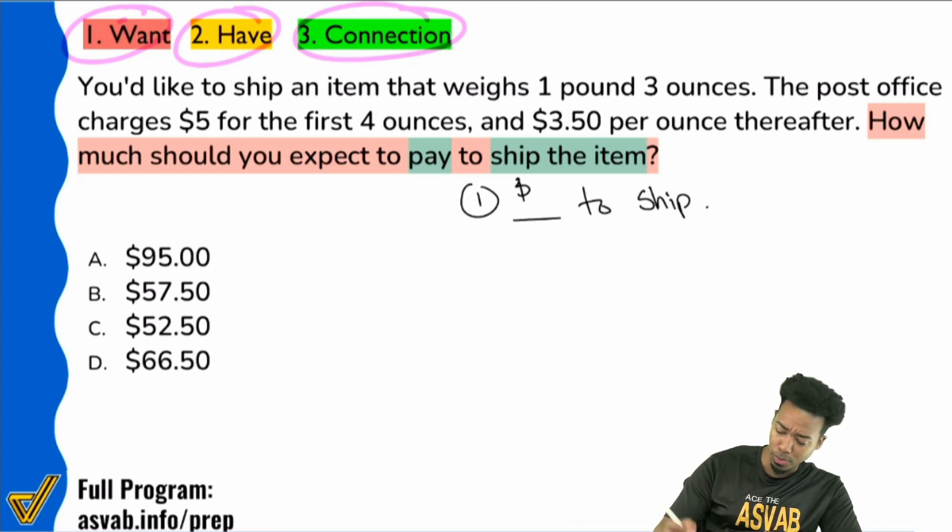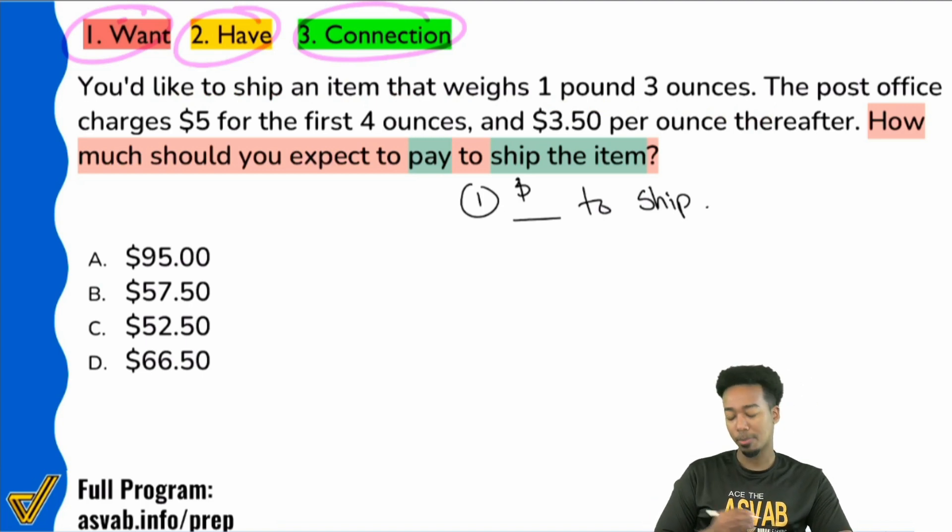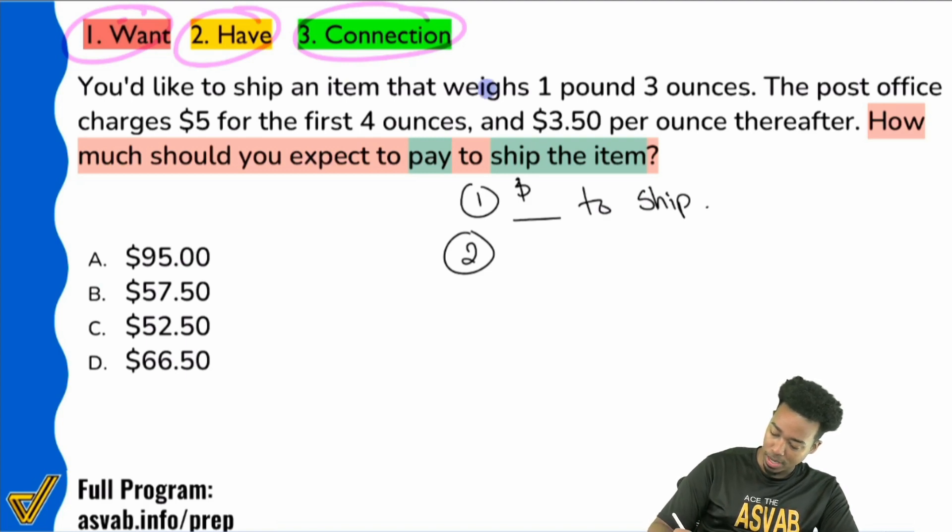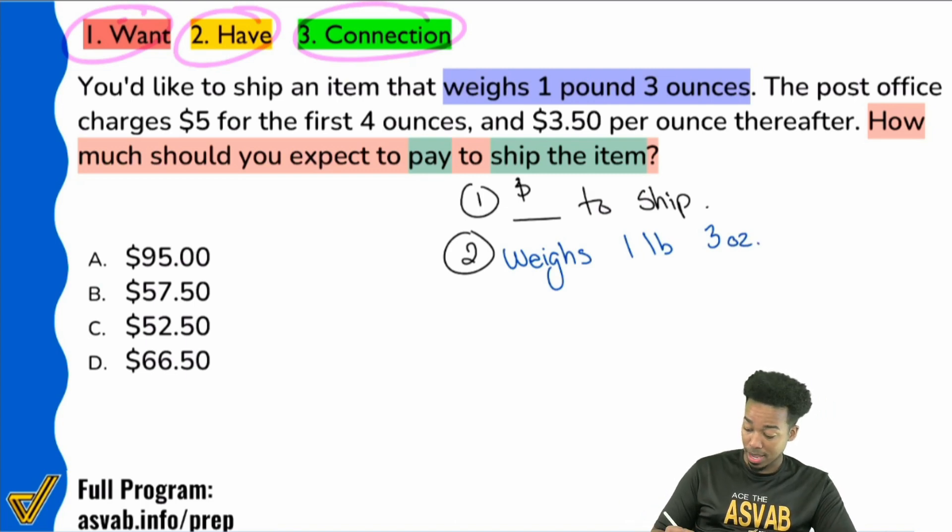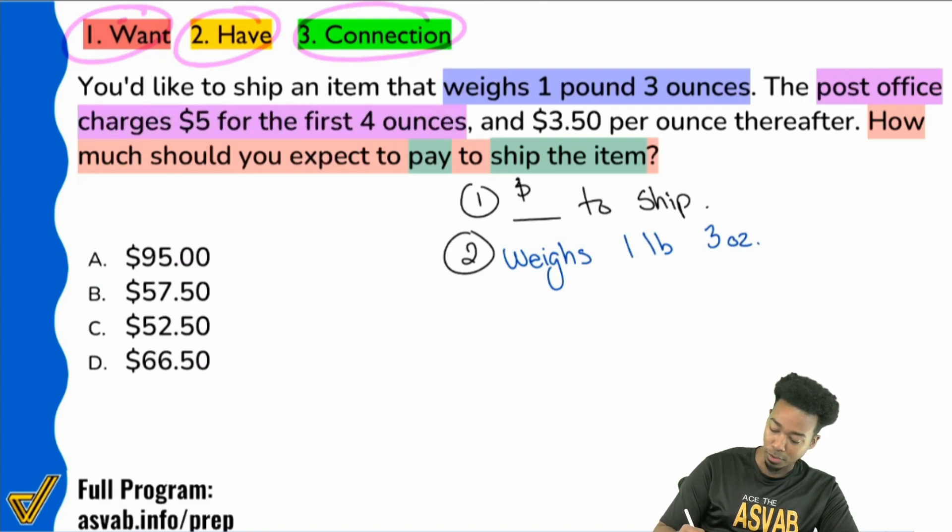So I'm going to read through here. In the beginning it's going to say, hey, you'd like to ship an item that weighs one pound three ounces. The post office charges five dollars for the first four ounces and three dollars and fifty cents per ounce thereafter. Let's go and split this information up here my party people. Let's go and split this up. So here it says we're trying to ship the item that weighs one pound three ounces.